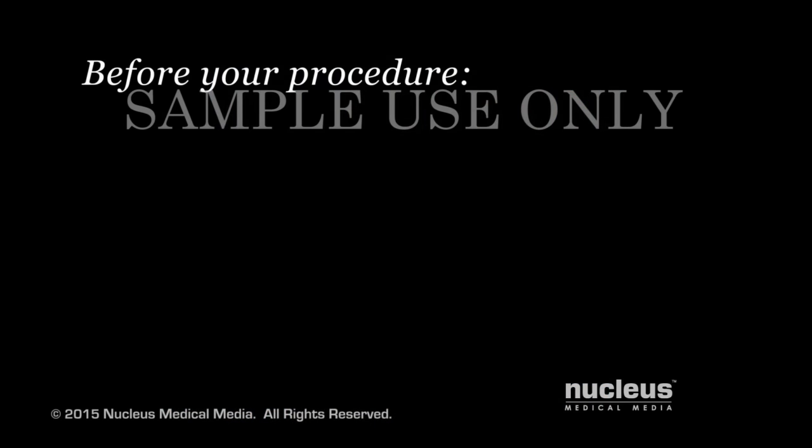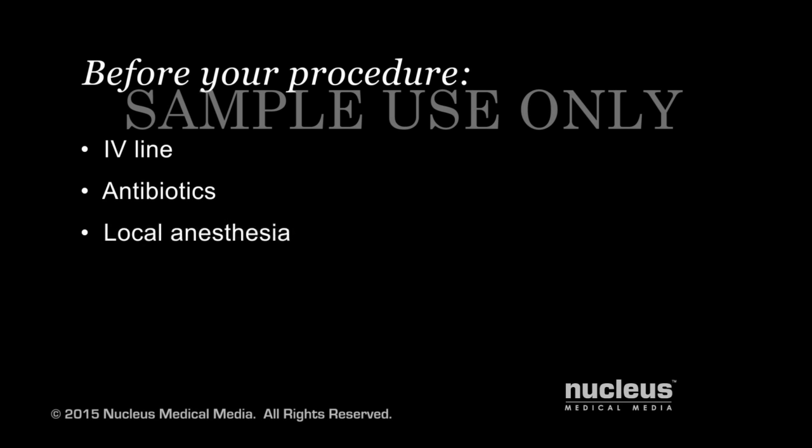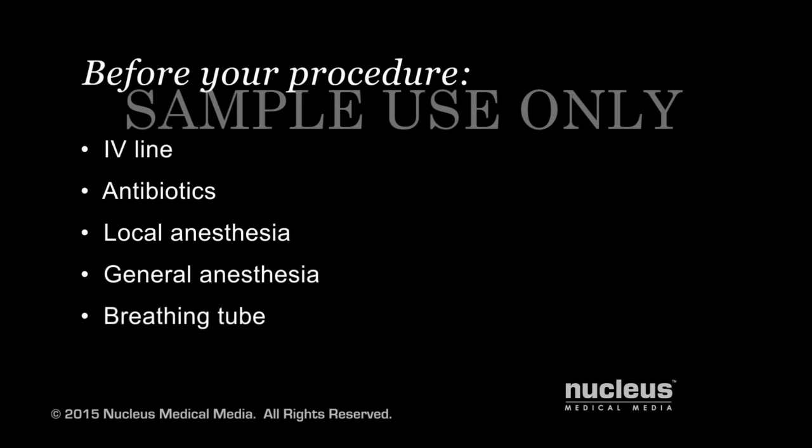Before either procedure, an intravenous line or IV will be started. You may be given antibiotics through the IV to decrease your chance of infection. You will be given local anesthesia to numb your back. In addition, general anesthesia may be used to keep you unconscious and pain-free during the procedure. If you receive general anesthesia, a breathing tube will be inserted through your mouth and down your throat to help you breathe during the procedure.